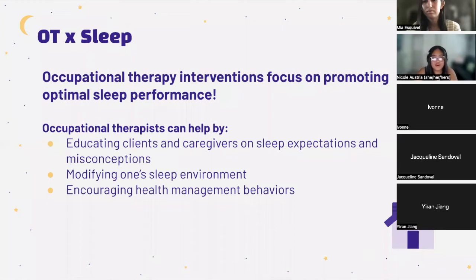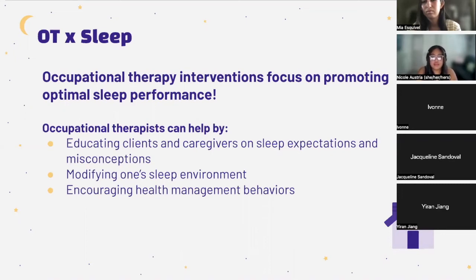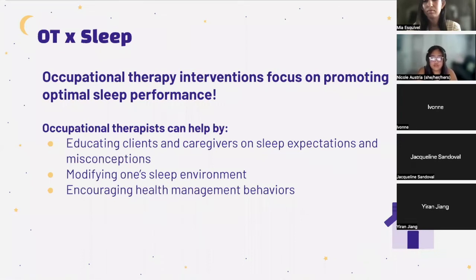Occupational therapy interventions focus on promoting optimal sleep performance. In 2008, the American Occupational Therapy Association's practice framework classified rest and sleep as its own area of occupation, no longer categorizing it as an activity of daily living. Occupational therapists can help analyze and modify an individual's environment and lifestyle. Examples of how OT can help include educating clients and caregivers on sleep misconceptions, modifying the environment including noise, light, temperature, and bedding, and encouraging health management behaviors such as smoking cessation, reduced caffeine intake, a balanced diet, and adequate exercise.